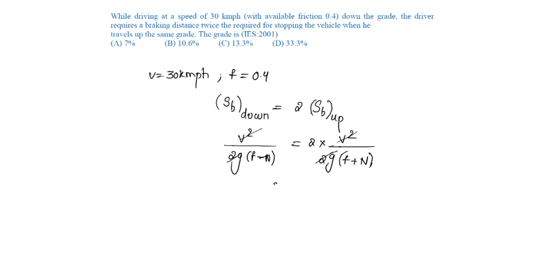That is, 2f minus 2n equals f plus n, so f equals 3n. We need to find n, which is f by 3: 0.4 by 3 equals 0.133, that is 13.3 percent, option C.